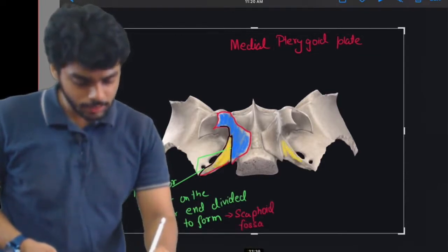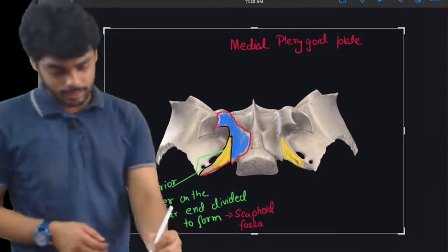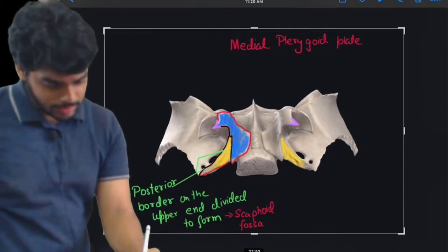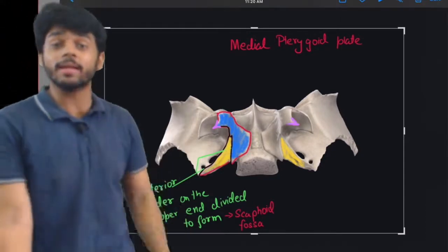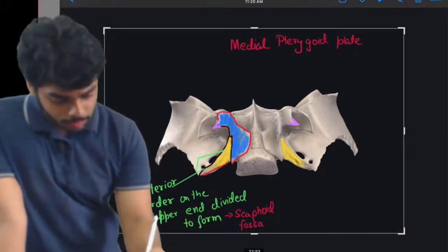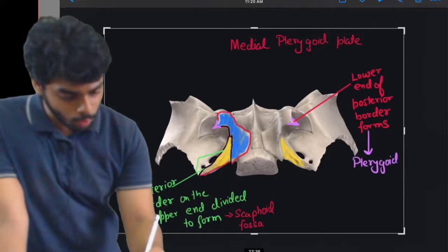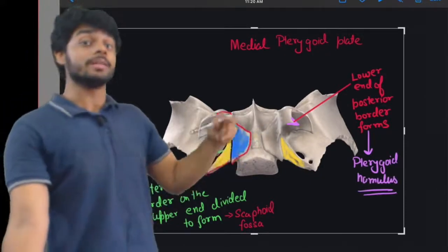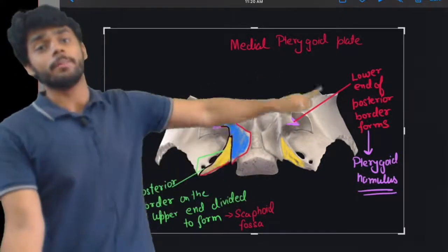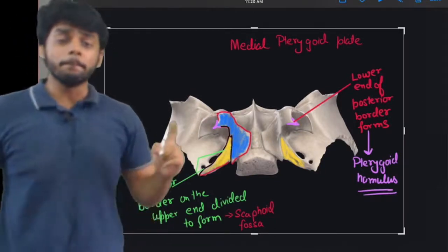You can appreciate the scaphoid fossa colored in yellow on both left and right sides. At the lower end of the posterior border is the hamulus — this hook-like structure is known as the pterygoid hamulus, marked in purple. The lower end of the posterior border forms the pterygoid hamulus. The sphenoid bone has also been turned upside down to study the Norma Basalis.